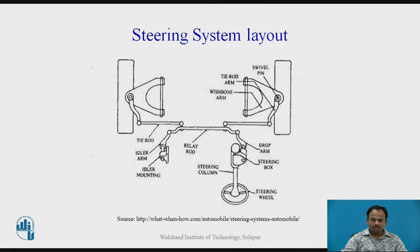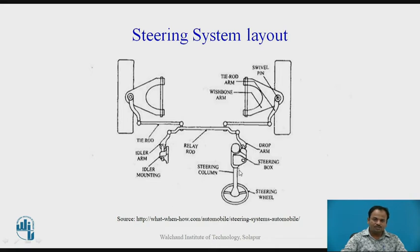This is the steering system layout in the vehicle. The steering wheel is connected on one end of the steering shaft, and the shaft is housed by the steering column. At the end of the steering column, there is a steering gearbox which converts the rotary motion of the steering wheel into the oscillating motion of a drop arm. This drop arm is connected to the steering gearbox and also to the center link of the steering system.